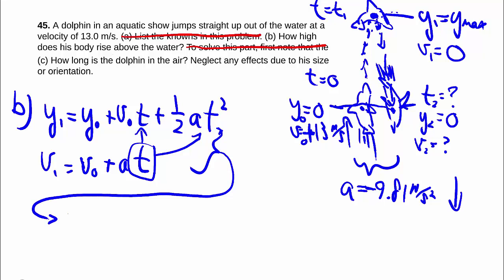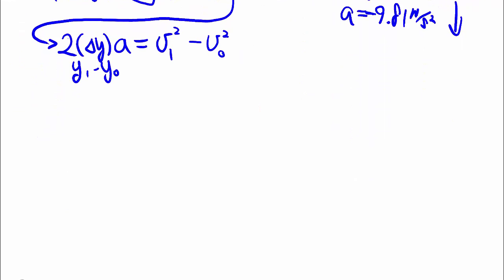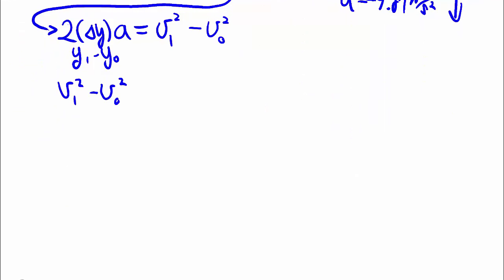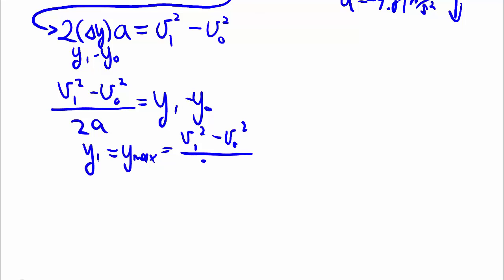What we'll get is, we'll get 2 times delta y times the acceleration is equal to vf^2 minus the original v^2. And now, we can sub it in because we know delta y is y1 minus y0, and we know everything else now. Rearranging, we can get v1^2 minus v0^2 all divided by 2a is equal to my delta y, which is y1 minus y0. So y1, which is my y max,